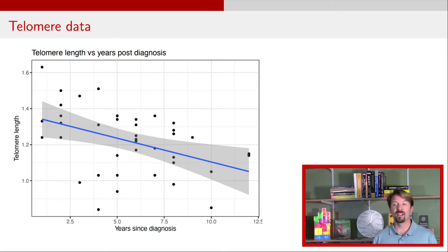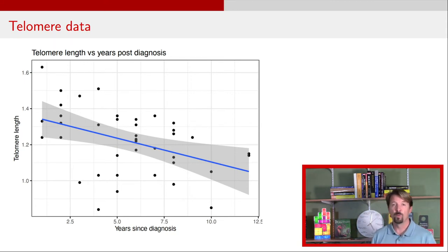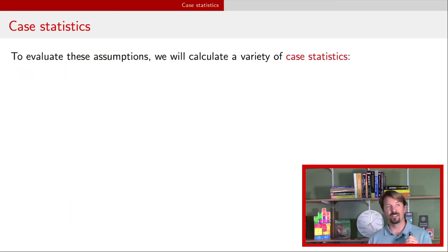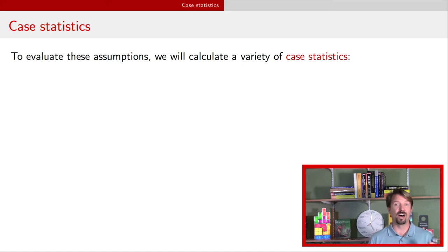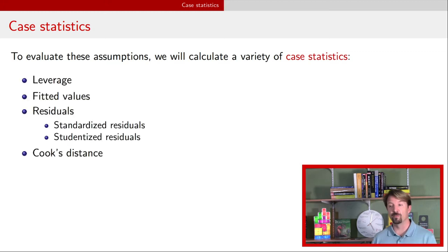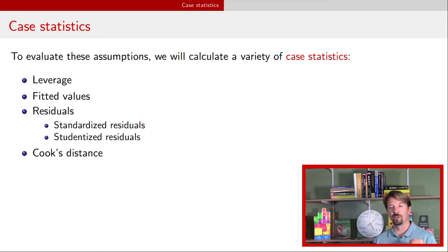In our previous videos, we've been talking about the telomere dataset, where the response is telomere length and the explanatory variable is years since diagnosis. We're going to use this to go through a whole bunch of graphs that look at different model assumptions, providing our diagnostics. In order to do that, we're going to calculate what are called case statistics — synonymous with observation-specific statistics. We'll talk about leverage, fitted values, residuals, two different kinds of residuals, and Cook's distance as our primary techniques for understanding model assumptions through plots.